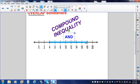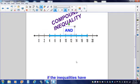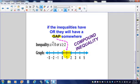AND compound inequalities overlap. Compound inequalities with the word OR go to the right, to the left, and they have a gap in between them. Both are compound inequalities.